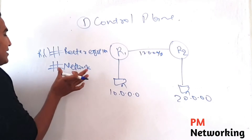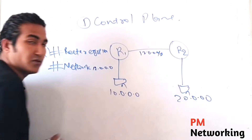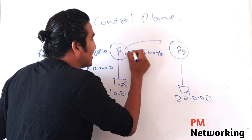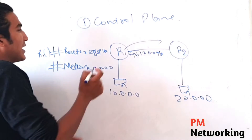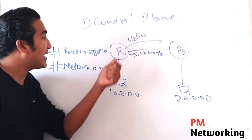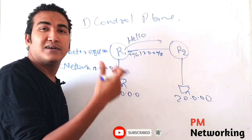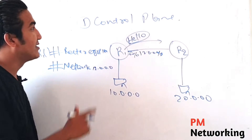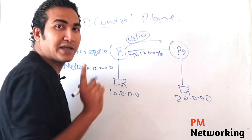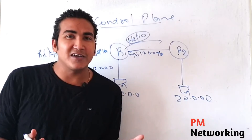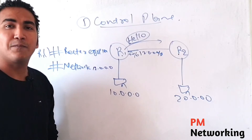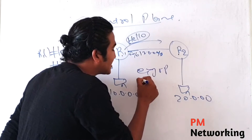When I run the network command 'network 12.0.0.0,' this router will start sending EIGRP hello messages and update messages to its interface. So this hello packet — understand that this hello message is generated by this device for R2, for another device. So what type of traffic is this hello message? It is control plane traffic, because this is traffic generated by a device for another device.